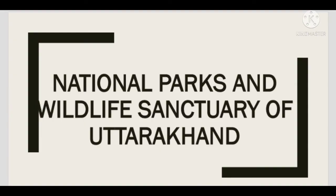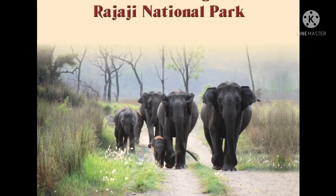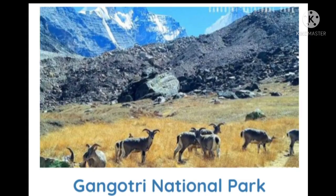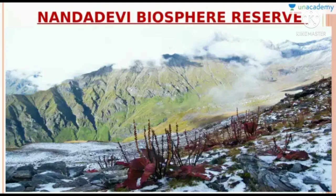For protecting flora and fauna, there are some national parks and wildlife sanctuaries situated in Uttarakhand. These include Corbett National Park, the first national park of India; Rajaji National Park, where 16 tigers are protected; Gangotri National Park; Nandadevi National Park; Govind Wildlife Sanctuary; and Nandadevi Biosphere Reserve.